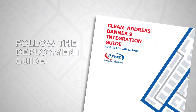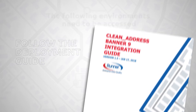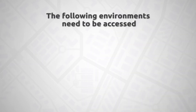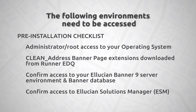You will need to follow the Clean Address for Banner 9 deployment guide during this installation. To complete the installation, you will need access to the following environments identified in the checklist: confirm administrator or root access to your operating system; Clean Address Banner 9 page extensions downloaded from RunnerEDQ; confirm access to your Ellucian Banner 9 server environment and Banner database; confirm access to Ellucian Solutions Manager, or ESM.